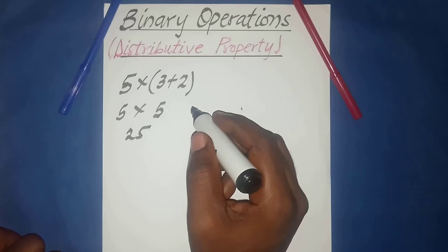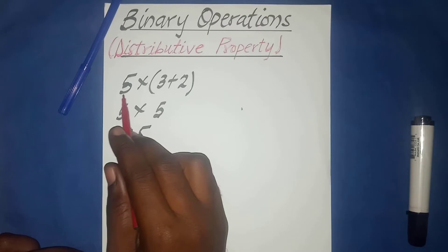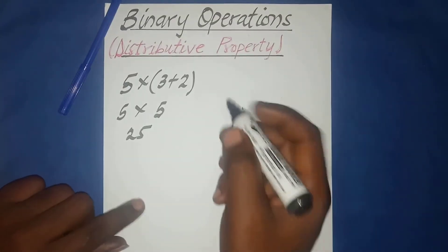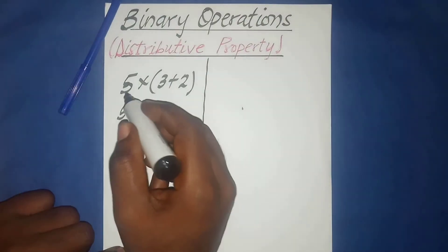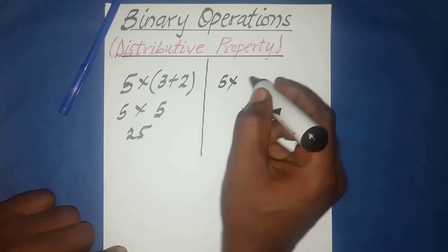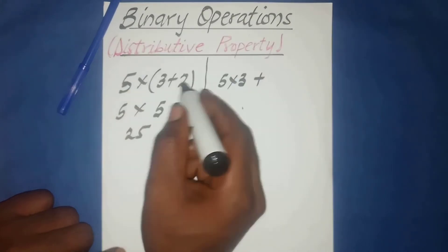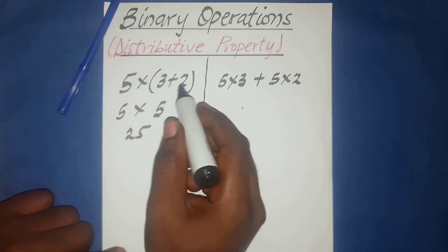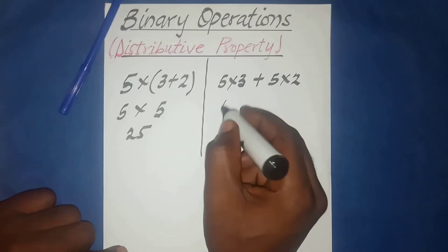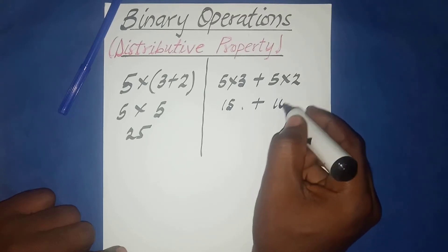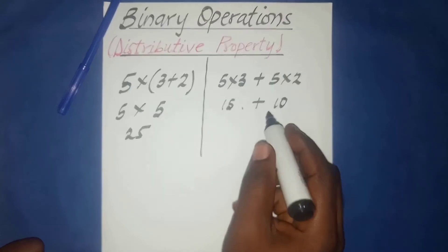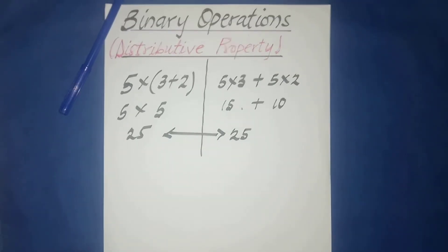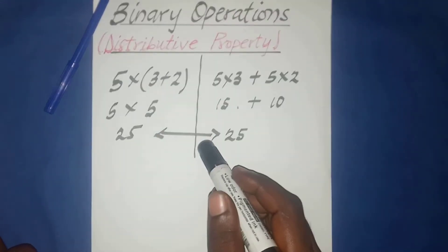We can also do this using the distributive property. We distribute the quantity five to the two quantities in the bracket, giving us five times three plus five times two. So five times three is fifteen, plus five times two is ten, which gives us fifteen plus ten equals twenty-five — the same answer.